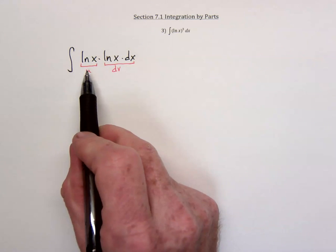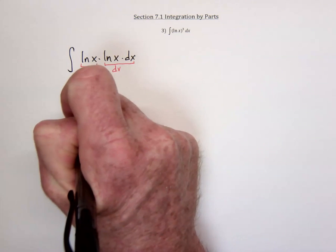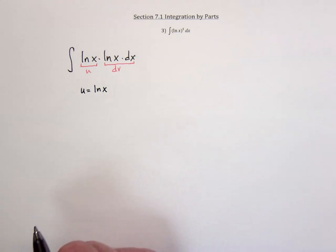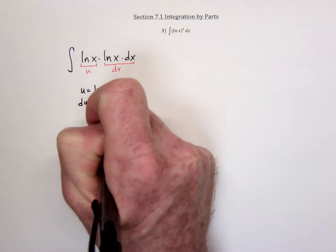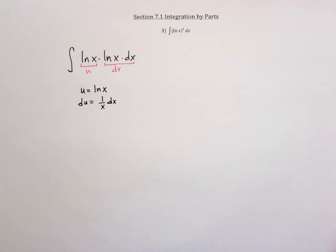So one of the guiding principles is that when you choose the u, the derivative of it should be something that's easier to work with than the original. That principle happens to work here because if you let u equal that natural log of x, the derivative of it is 1 over x, which in most cases is easier to integrate.